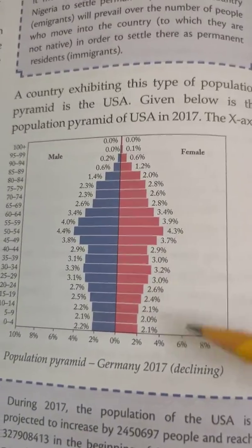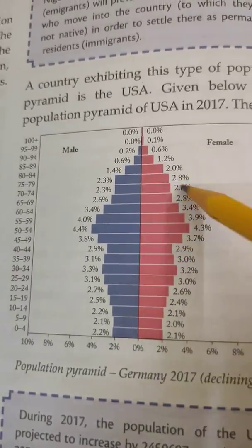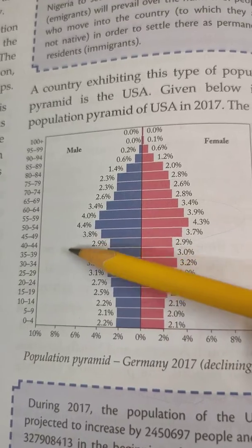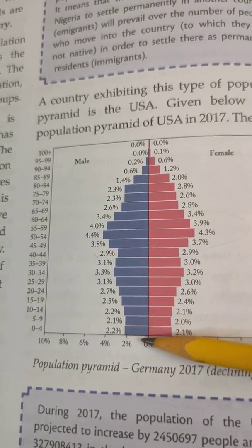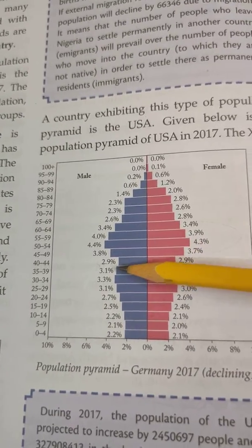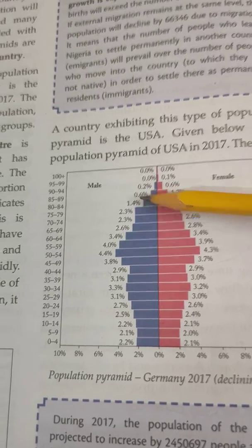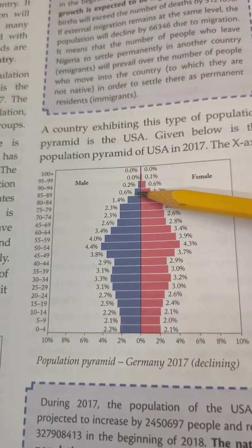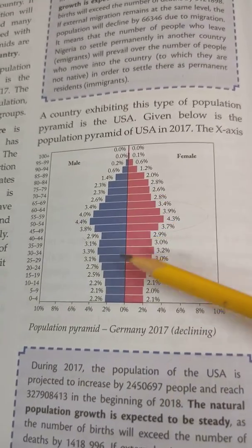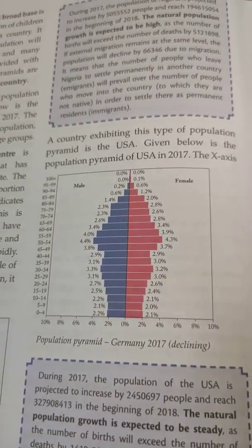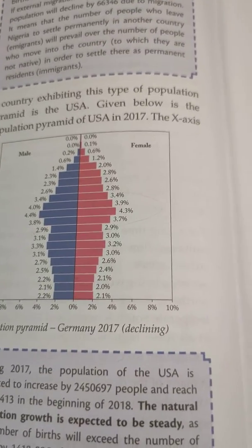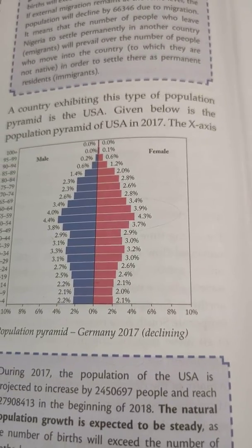In the Germany population pyramid, the working population presently is very high, but the lower age group — from 0 to 40 — is very small. When they grow up, the number of working people will decrease, and as they go beyond 60, the dependent population will increase. So working population less, dependent population more — this is a declining pyramid, meaning Germany will have more people to look after and more liability in the coming years.